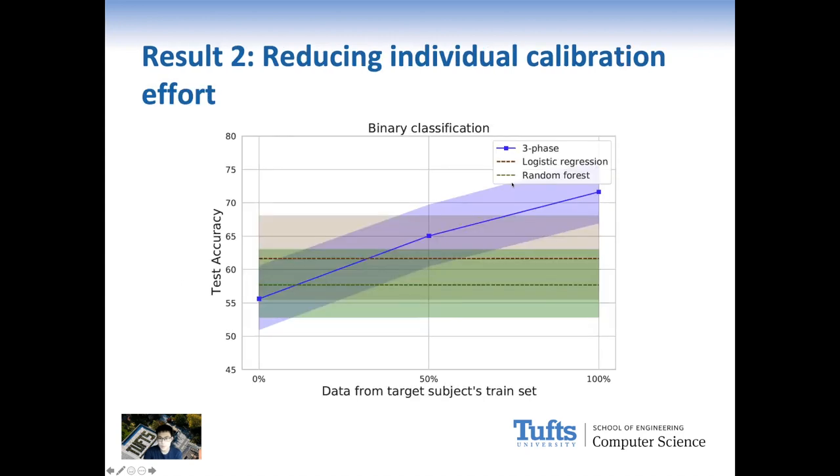Reducing individual calibration efforts has practical implications for real-time BCI systems. Therefore, we further investigate how well our approach works at reducing individual calibration efforts. This figure shows the performance versus the percentage of data used for the target subjects for binary classification. We found that our approach, using only 50% of the subject's training data, consistently outperformed traditional approaches like logistic regression and random forest trained with the full size of the subject's training data.